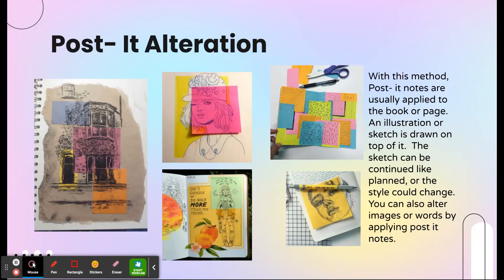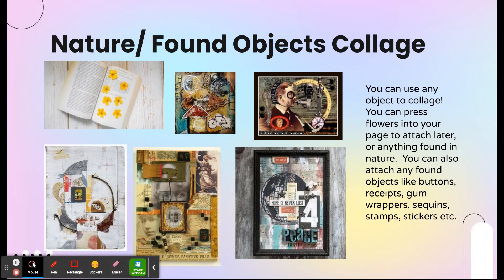Another type is post-it note alteration. You can stick post-it notes down on your page to create an effect where something is different on the post-it note than on the background, or it can just change the tone or color of your paper. You can also do collage with basically anything — if you like pressed flowers you can include those, or found objects like gum wrappers, random stickers you've been collecting, or anything really.